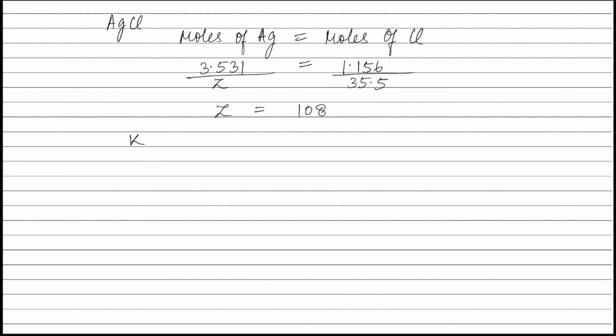Therefore, atomic weight of potassium X equals 39, atomic weight of chlorine Y equals 35.5, and atomic weight of silver Z equals 108.